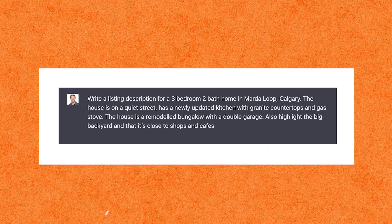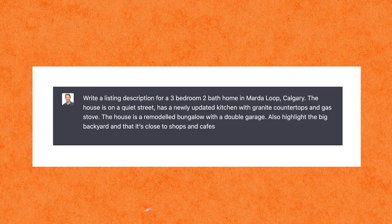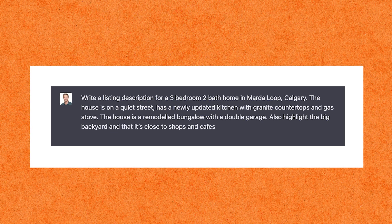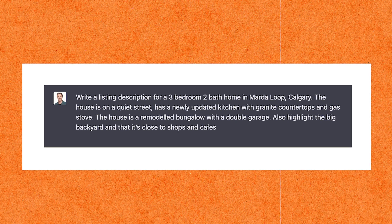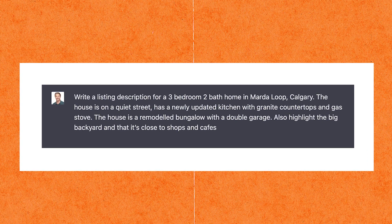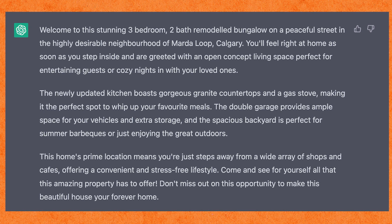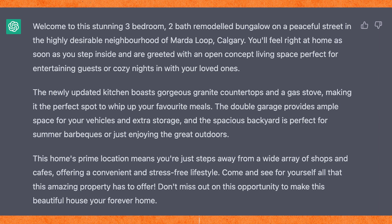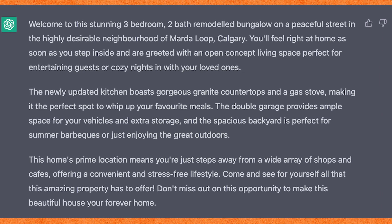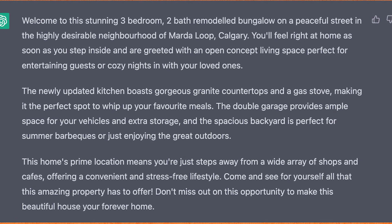We have to think in terms of commands. 'Write a listing description for a three-bed, two-bath, 1,500-square-foot home in X community. One of the great things about this home is it backs onto a park, it's close to shopping, has a recently renovated kitchen and bathroom, a fully developed basement, and a double car garage in the back.' Now that we've given it that detail, it's going to produce a pretty impressive listing description. You don't have to use it word for word, but it generates great ideas you can shape into your own voice.